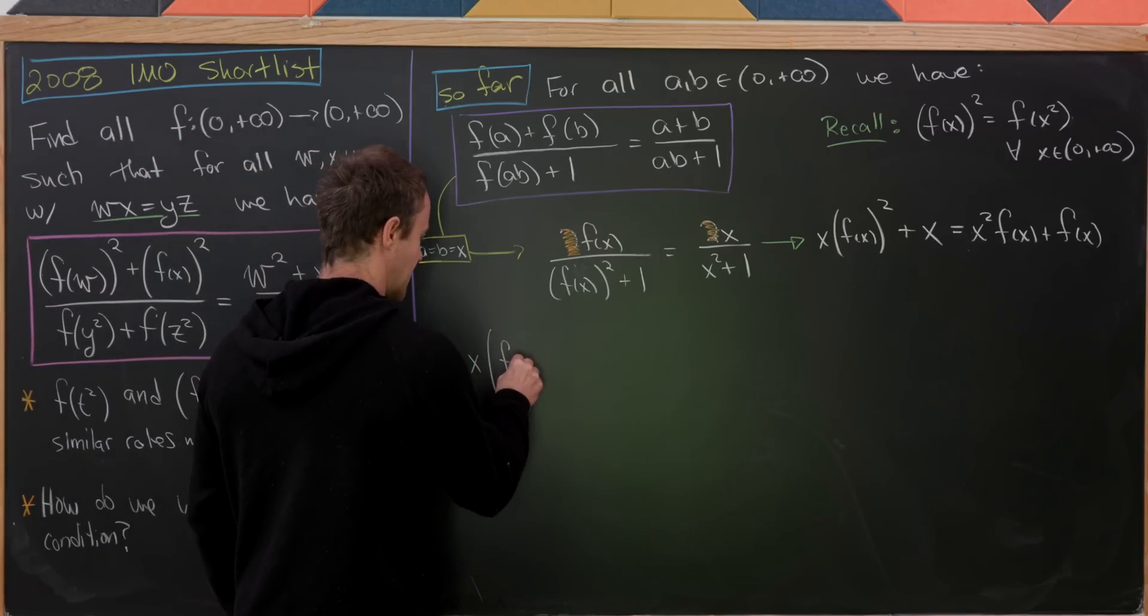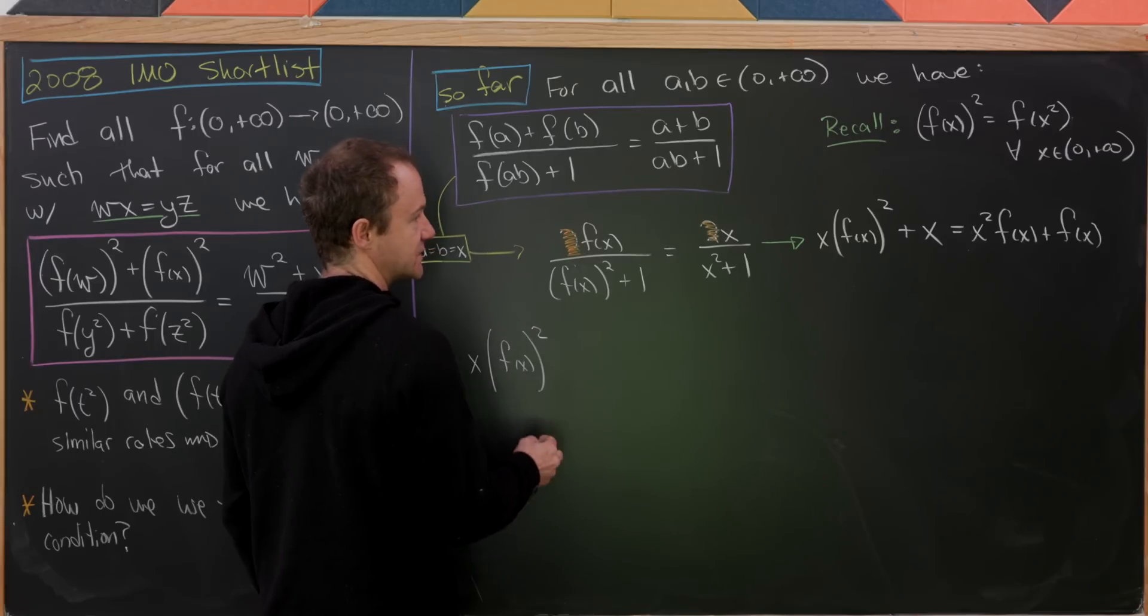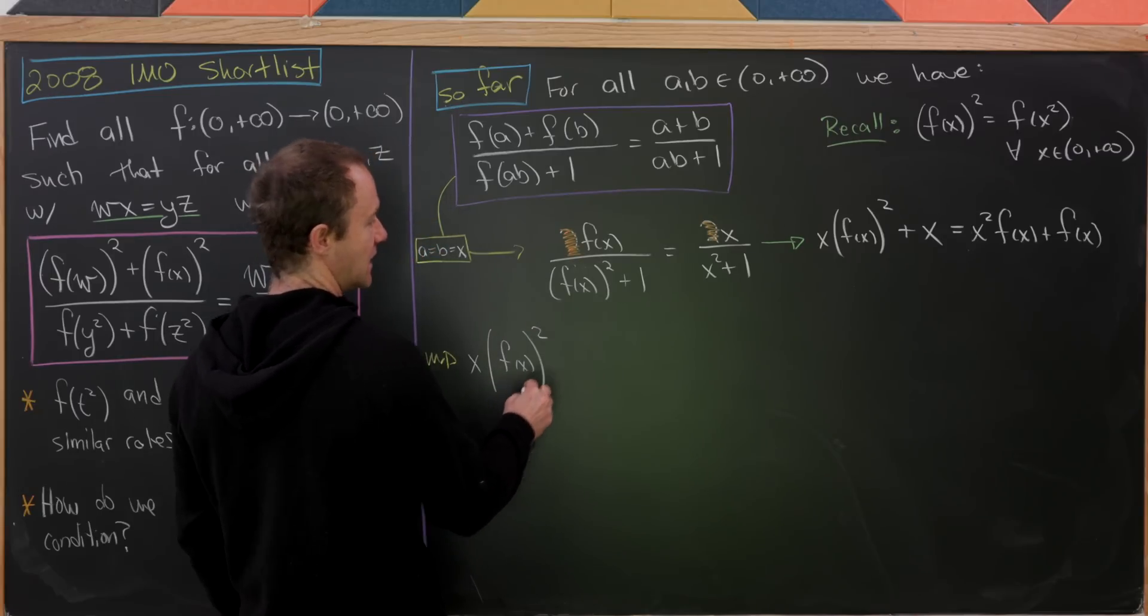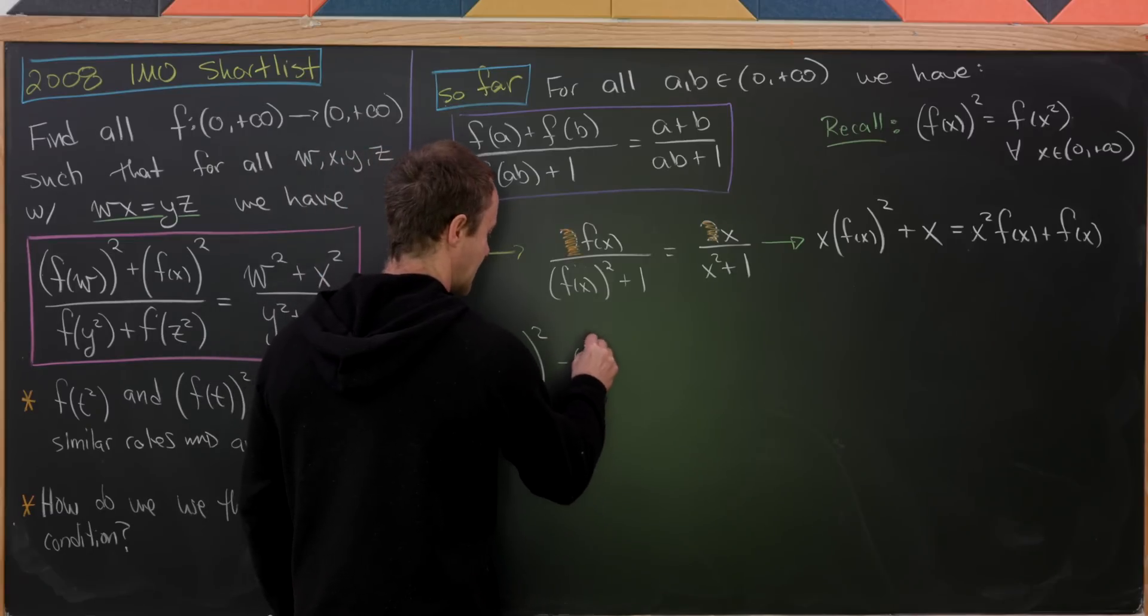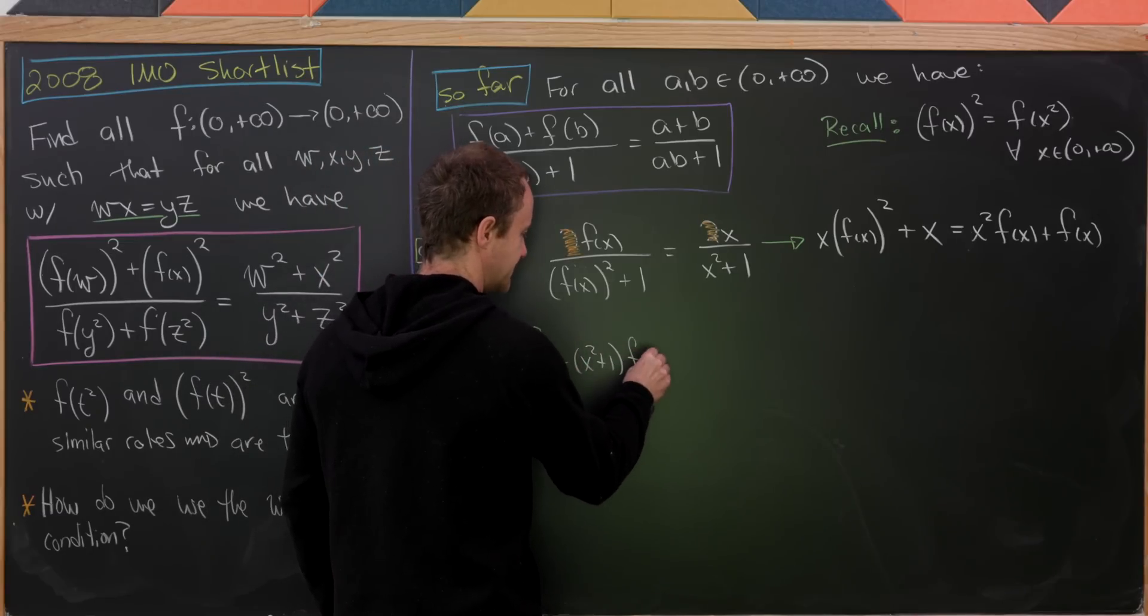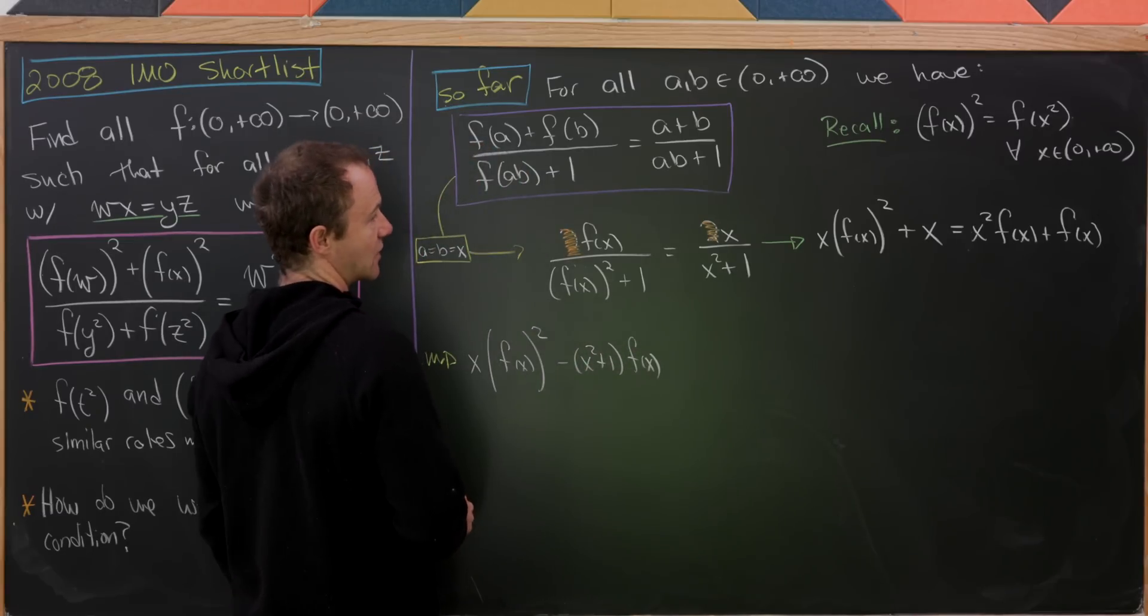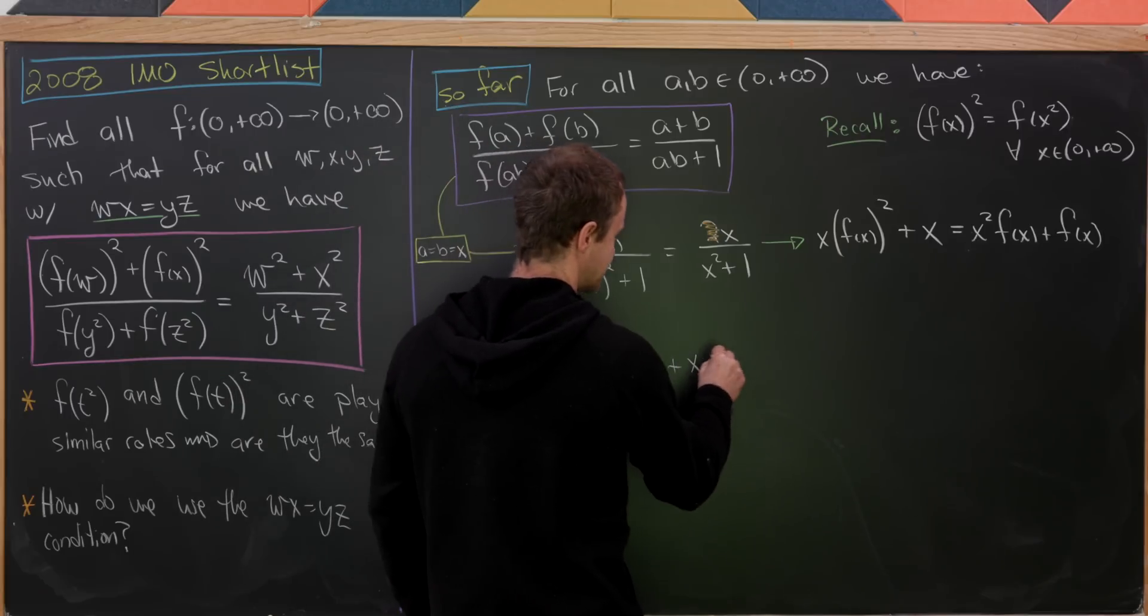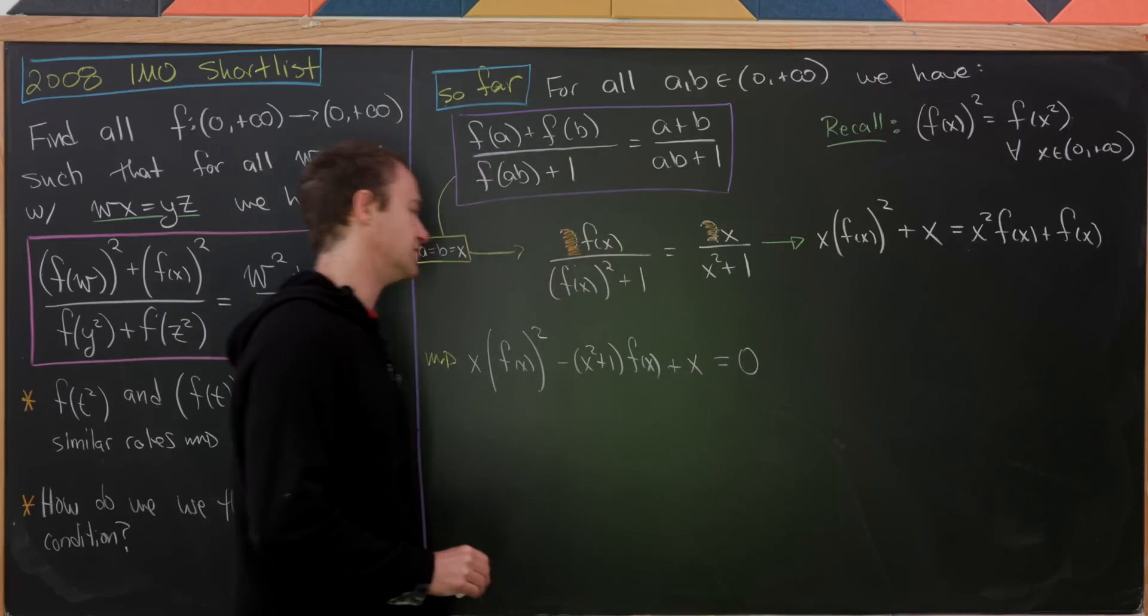But now if we could gather this so it looks like a quadratic equation where f(x) is the variable, what would that look like? So we'll have x times f(x)², and then we'll have minus (x² plus 1) times f(x), just factoring all that stuff out, and then plus x. And we have that's equal to 0.